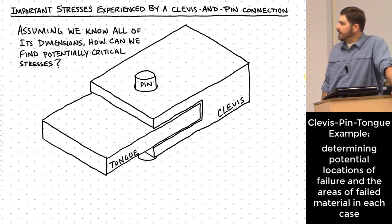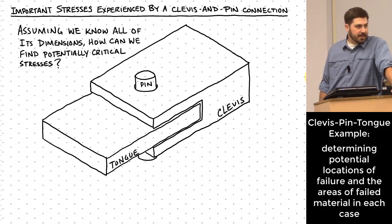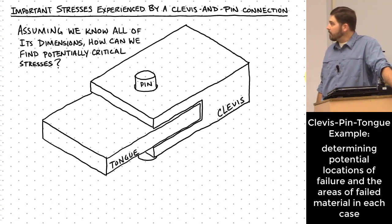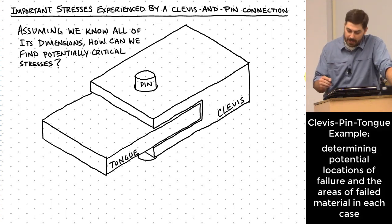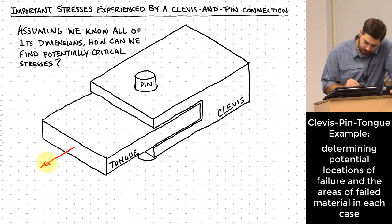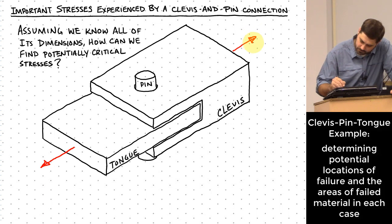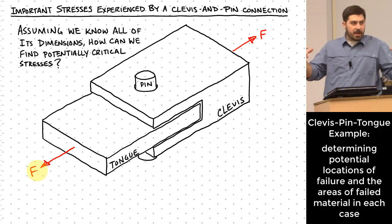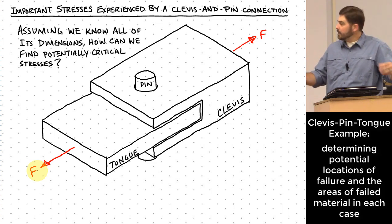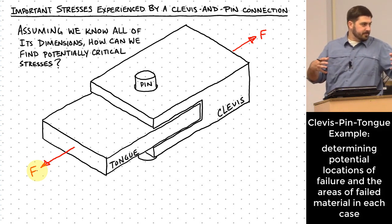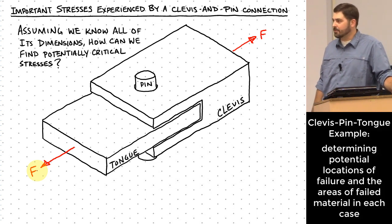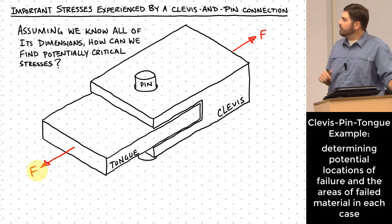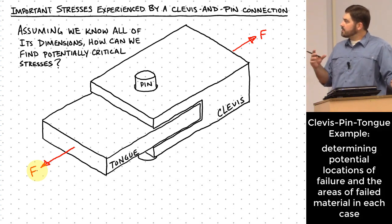Let's look at a tongue, pin, and clevis system — sometimes called a clevis and pin connection. Let's say for this connection we know all of the dimensions. If I apply a force F to it and keep pulling harder and harder, at some point these parts are going to come apart — and that would be a failure. So let's think through the ways that this thing could fail so that it could come apart, and figure out how we would determine the area of the plane that failed so we can define how much stress was occurring.